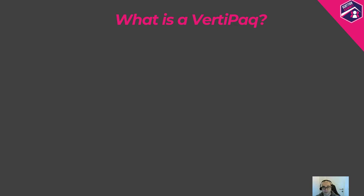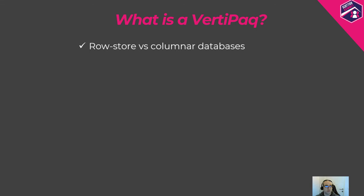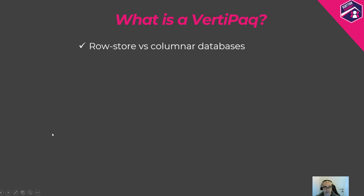What is VertiPaq? Before we answer that, we should mark the line between row-store versus columnar databases. VertiPaq is a columnar database. Columnar databases store and compress data in a whole different way compared to traditional row-store databases. They are usually implemented in large analytical systems as they are optimized for vertical data scanning, which means that every column has its own structure and is physically separated from other columns.